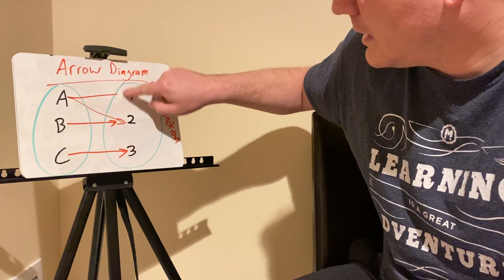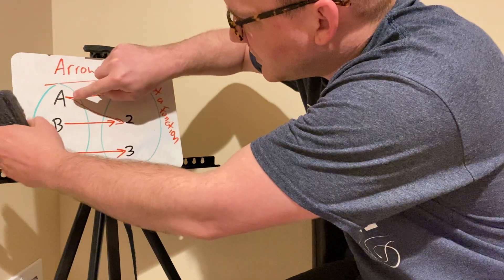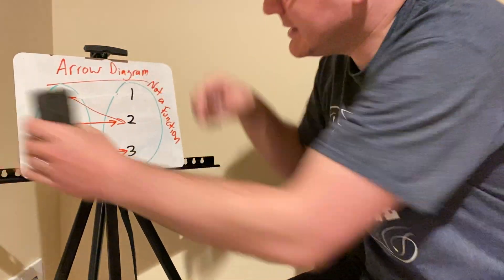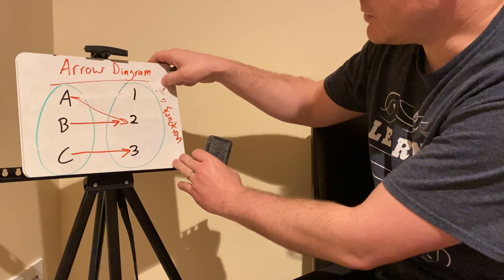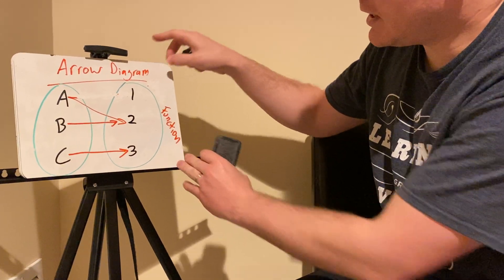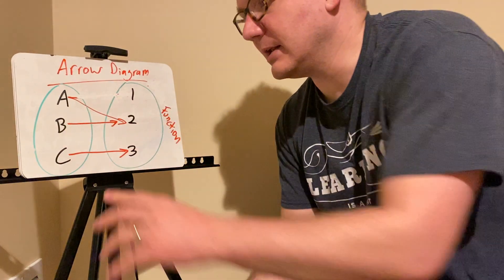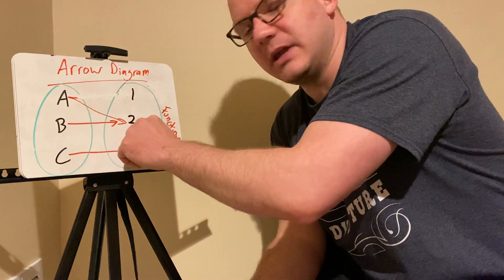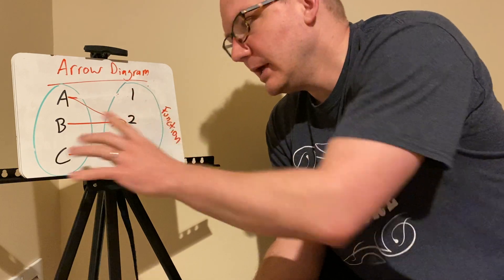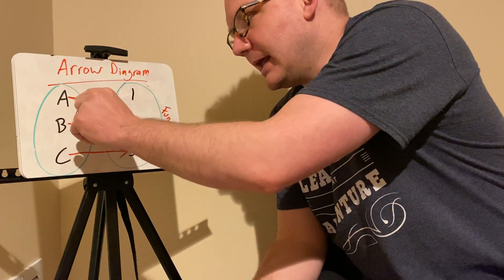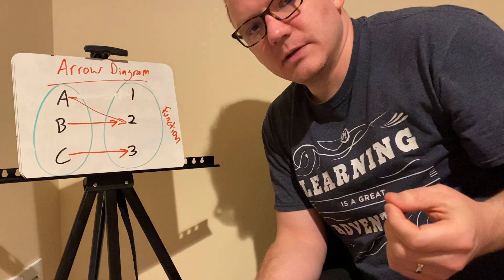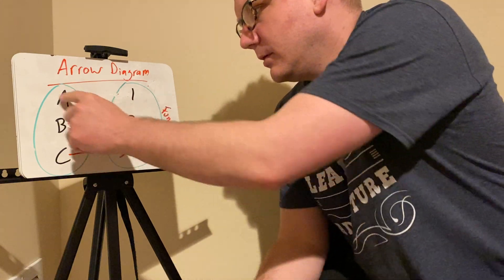However, for the sake of just pointing out this to you, this is now a function. So now it's a function because every input has only one output. That doesn't mean to say that a and b both couldn't have an output of two. That's possible. However, a cannot have two different outputs. They can only have one output for each input.